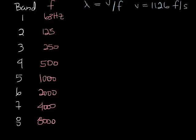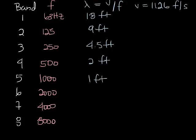You come up with the wavelength of the first octave band is about 18 feet, the second octave band is about 9 feet, the third is about 4 1⁄2, the fourth is about 2 feet, the fifth is about 1 foot, the sixth is about 1⁄2 foot, the seventh is about 1⁄4 foot, and the eighth is about 2 inches.